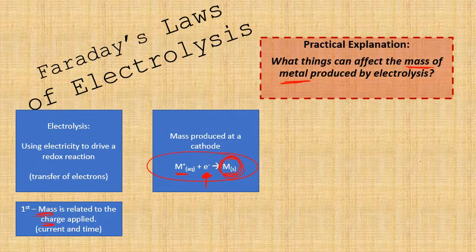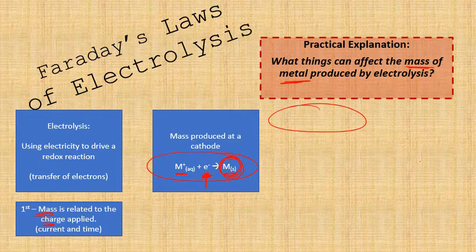Faraday's first law is about how mass is related to the charge, which is a measure of current and time. More current, more time, more mass produced — that's Faraday's first law.